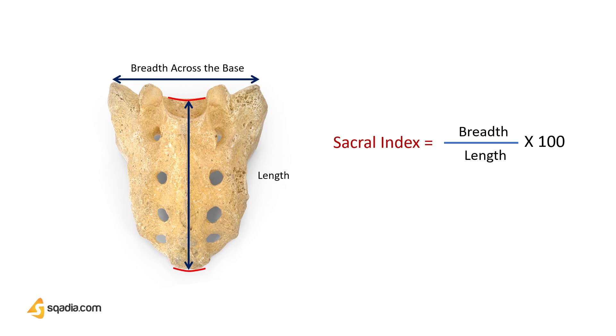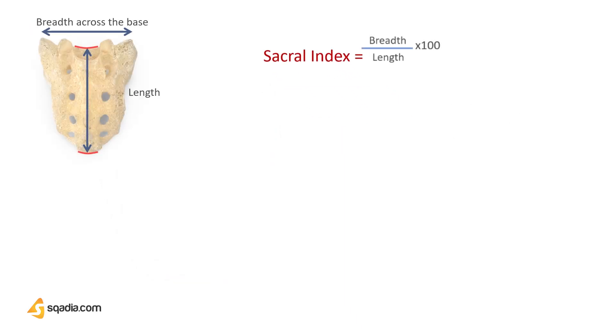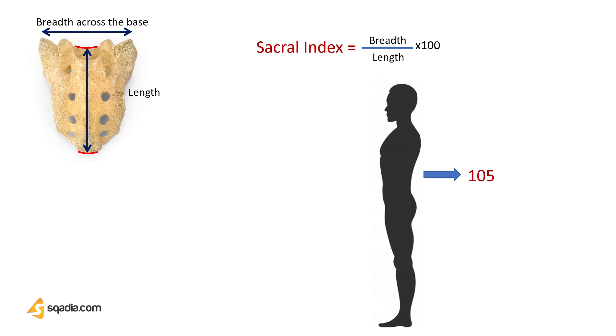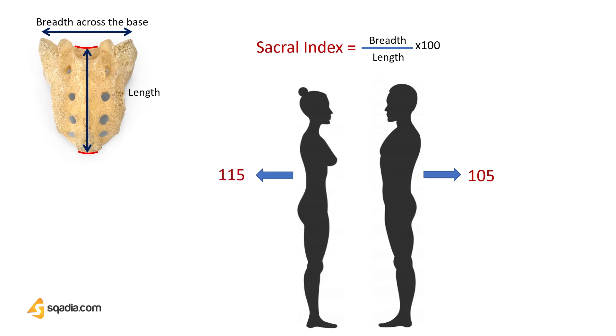Usually the sacral index in males is 105 and in females it is almost 115. This index is more in females because females have a larger breadth compared to males. It is more in females to facilitate labor. This fact will help you remember how to distinguish between a male and a female sacrum.